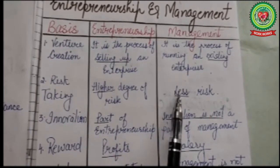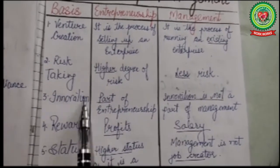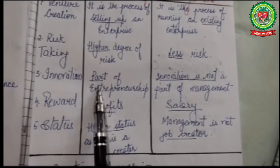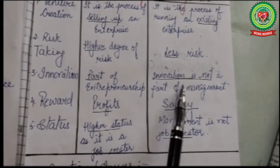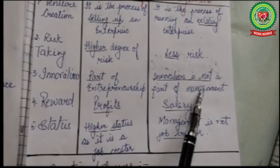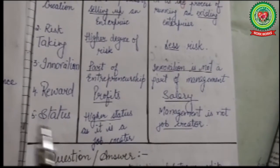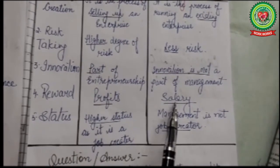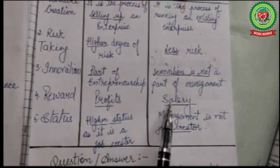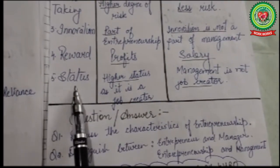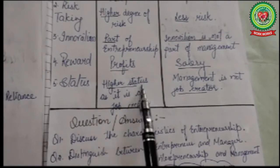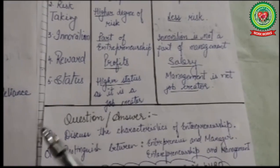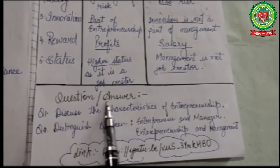The manager gets a regular salary, so management involves less risk. Third difference is innovation — entrepreneurship involves innovation, but innovation is not an essential part of management. Fourth is reward — profits are the reward of entrepreneurship, but salary is the reward of management. Fifth, based on status — entrepreneurship enjoys higher status than management because the entrepreneur is a job creator.